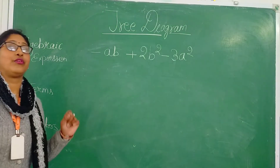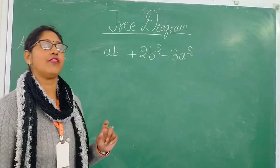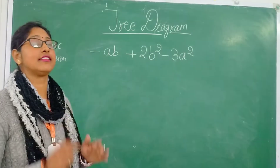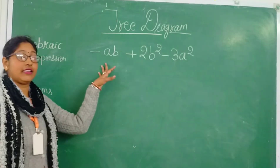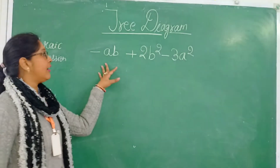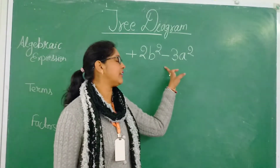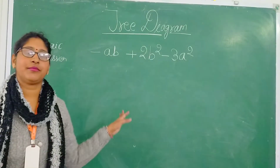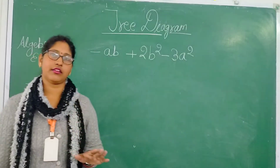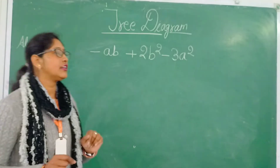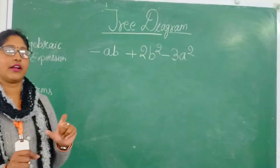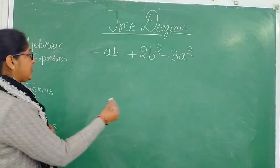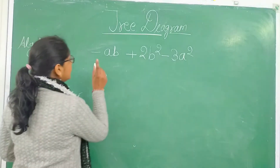Now we will understand the tree diagram with the help of one more example. Our second example is the algebraic expression: minus ab plus 2b² minus 3a². In this algebraic expression we have three terms. We know that terms can also be separated by a minus sign.